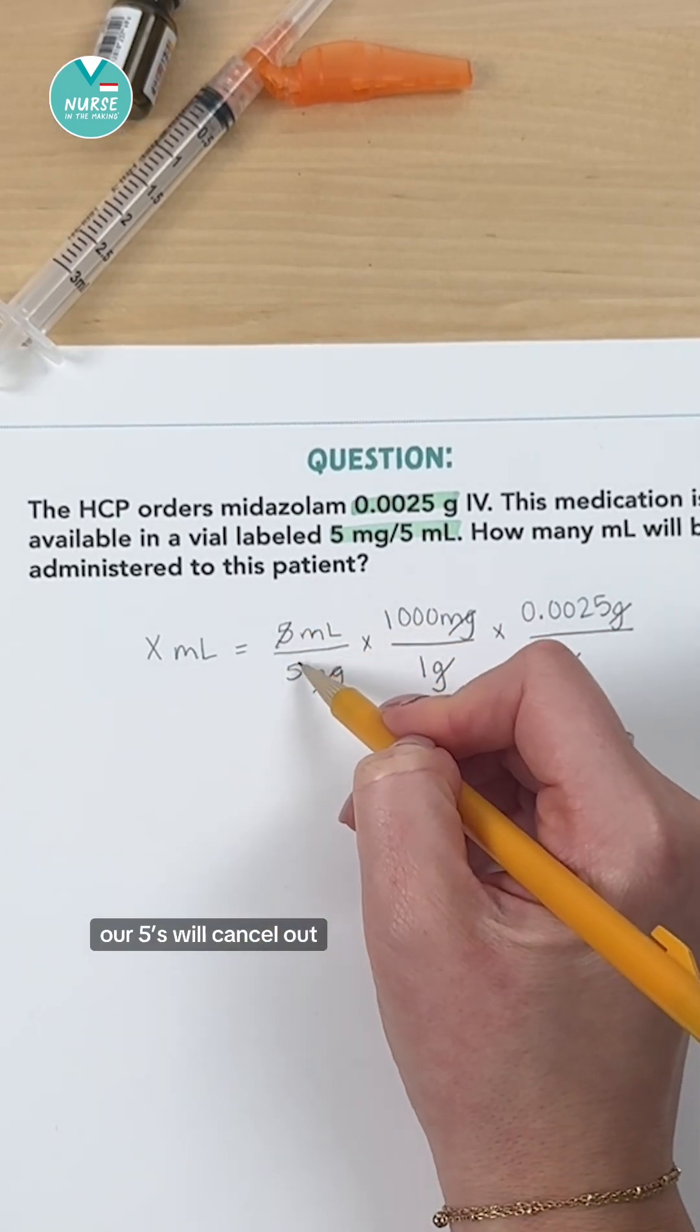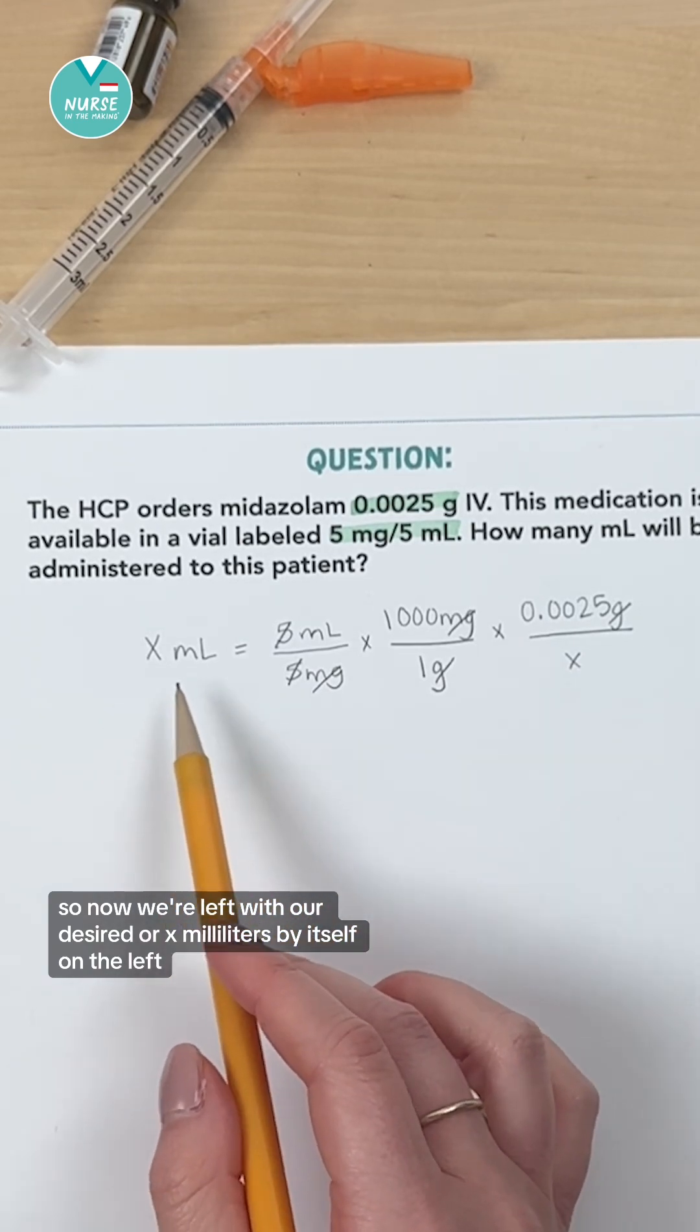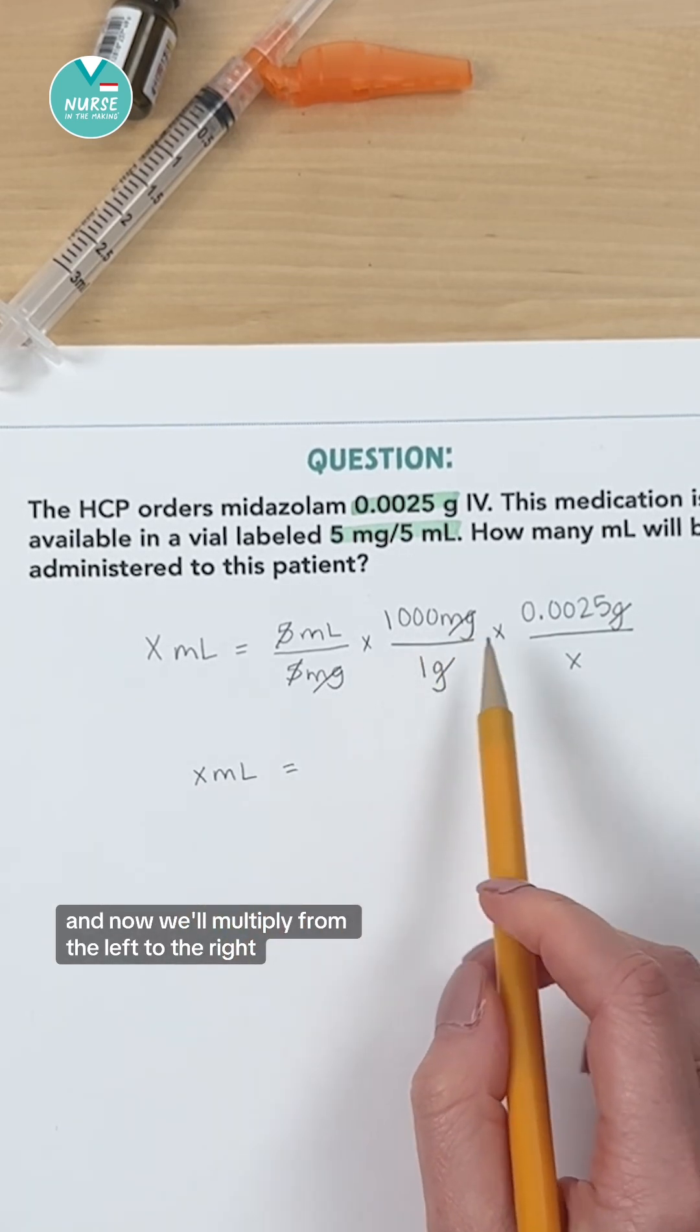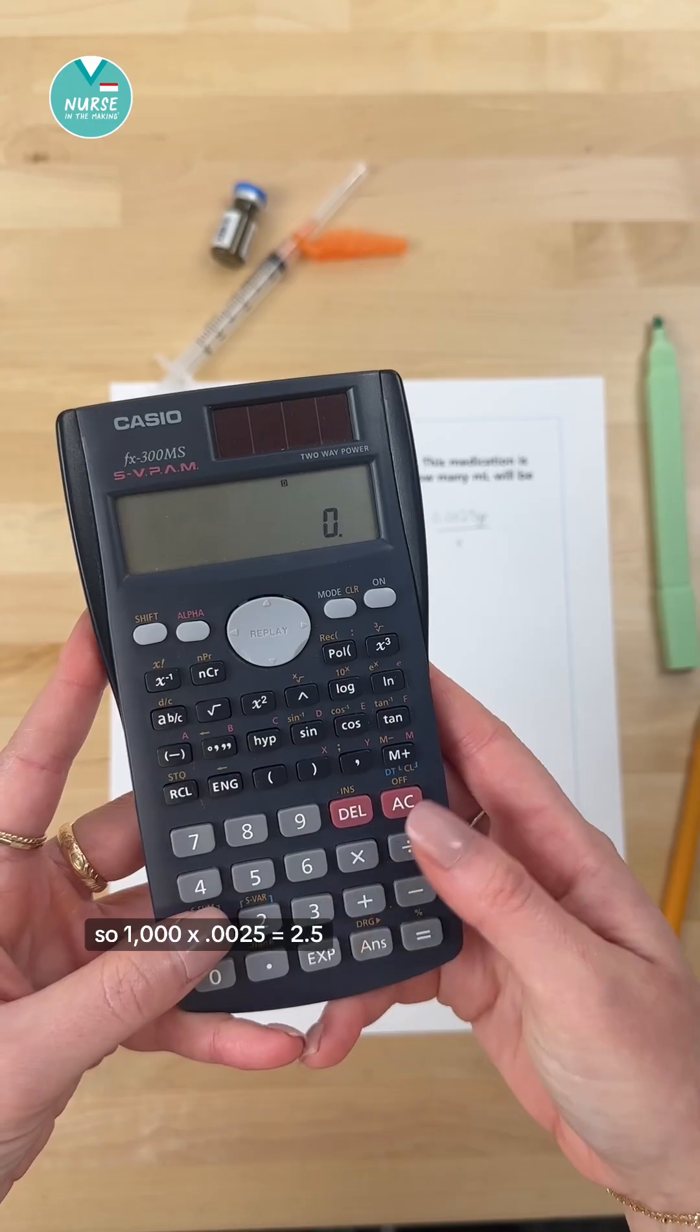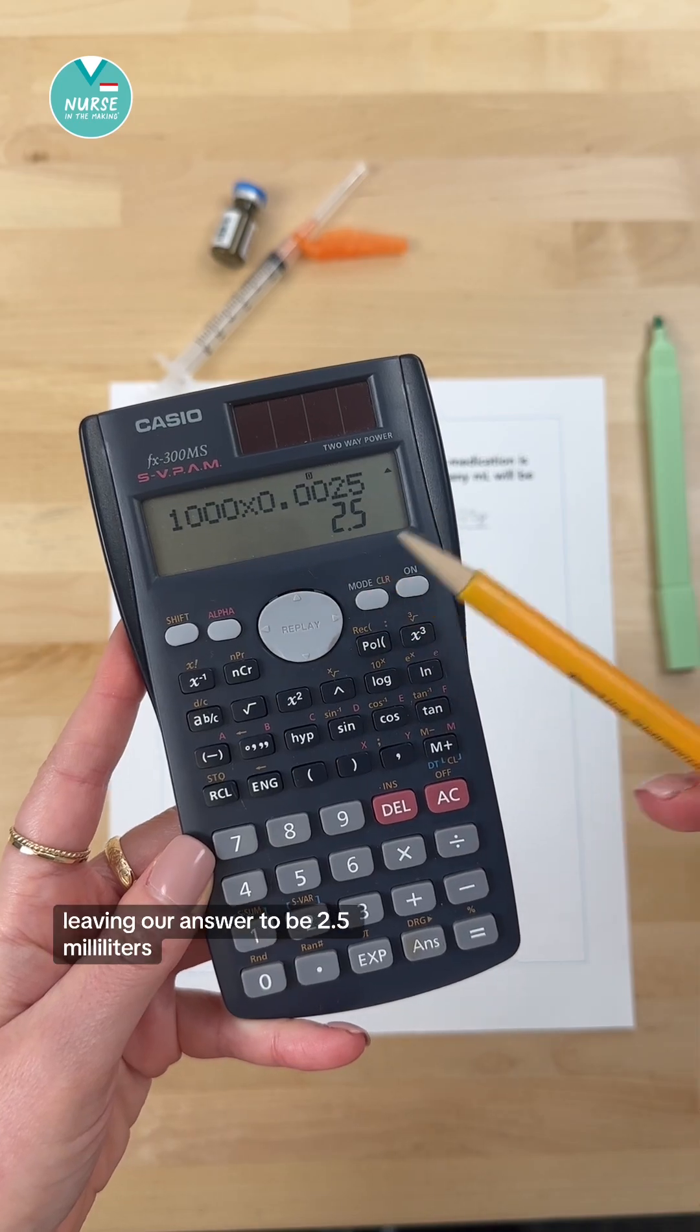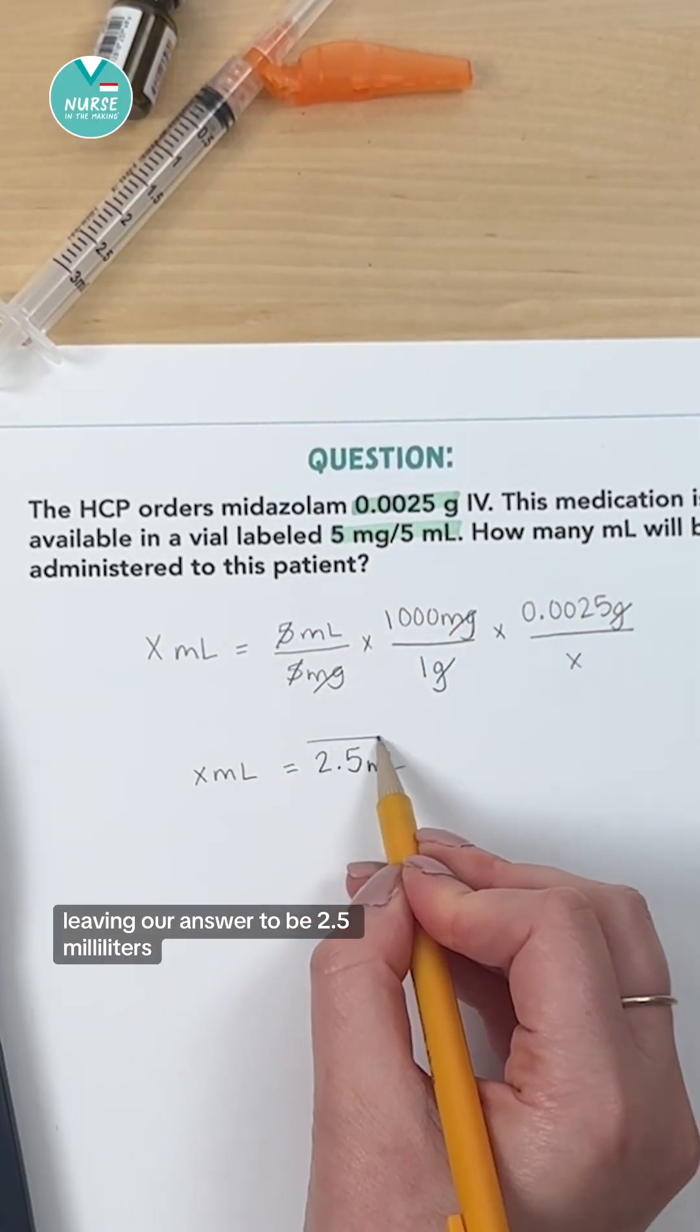Our fives will cancel out. So now we have our desired x milliliters by itself on the left. And now we'll multiply from the left to the right. So a thousand times 0.0025 equals 2.5, leaving our answer to be 2.5 milliliters.